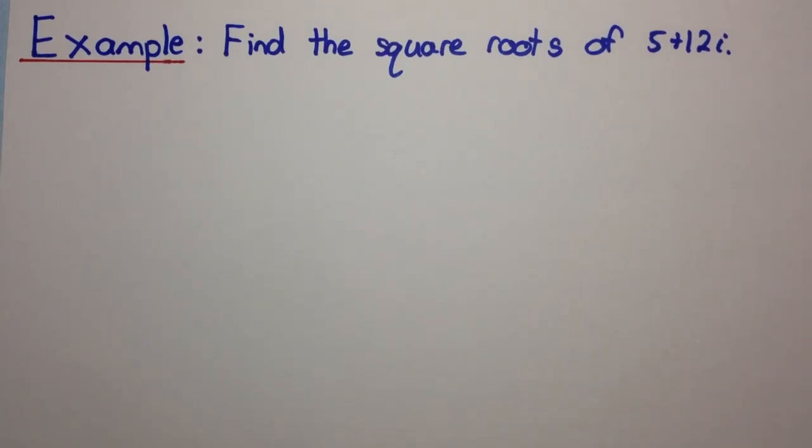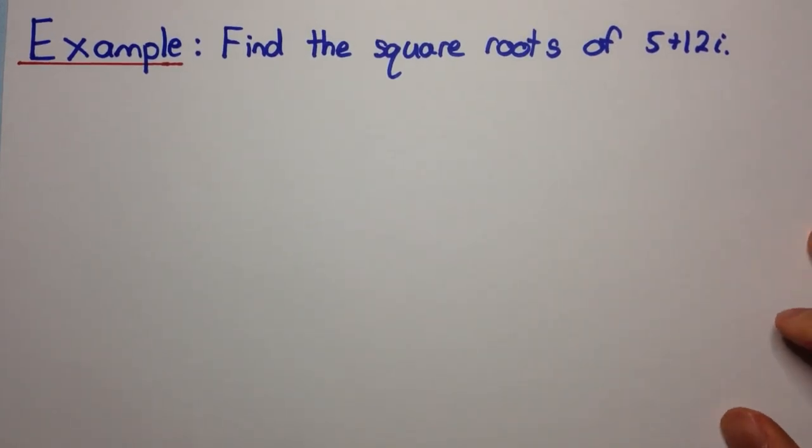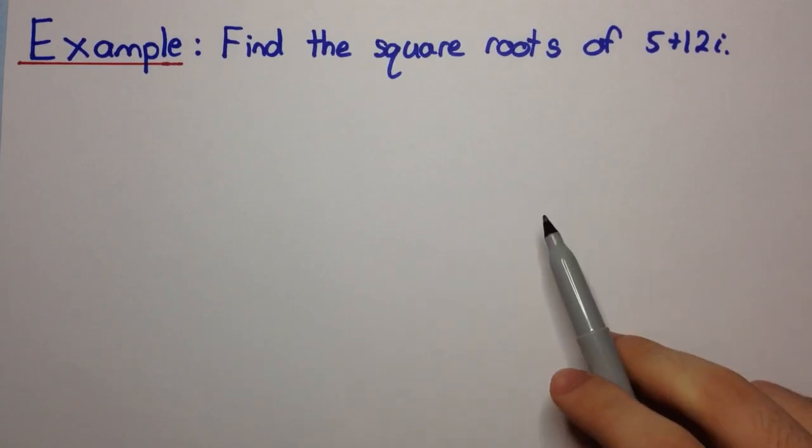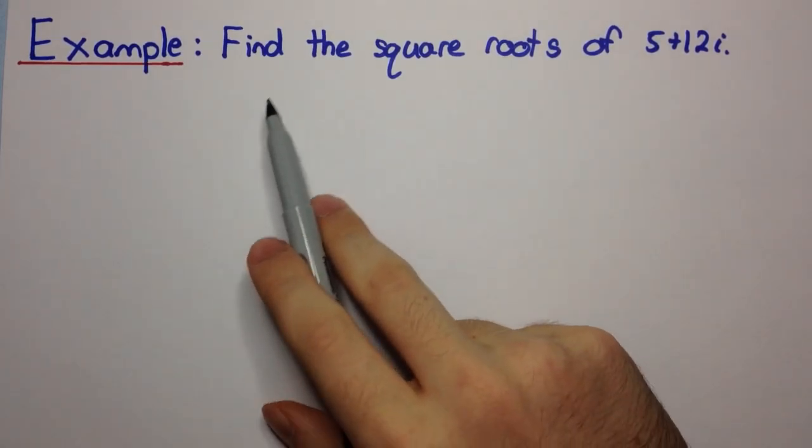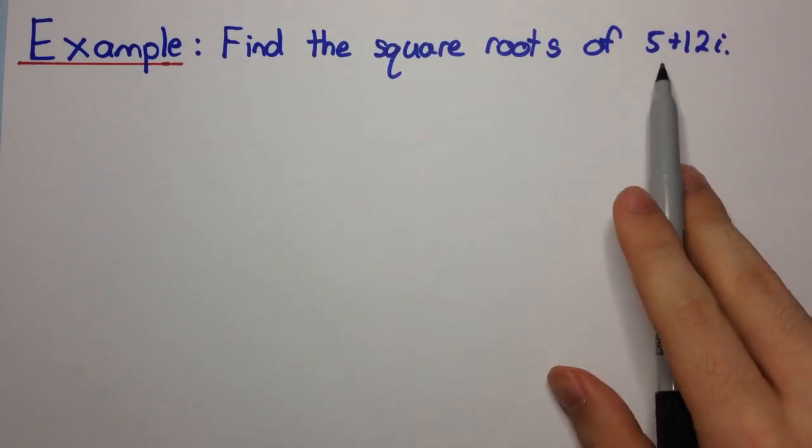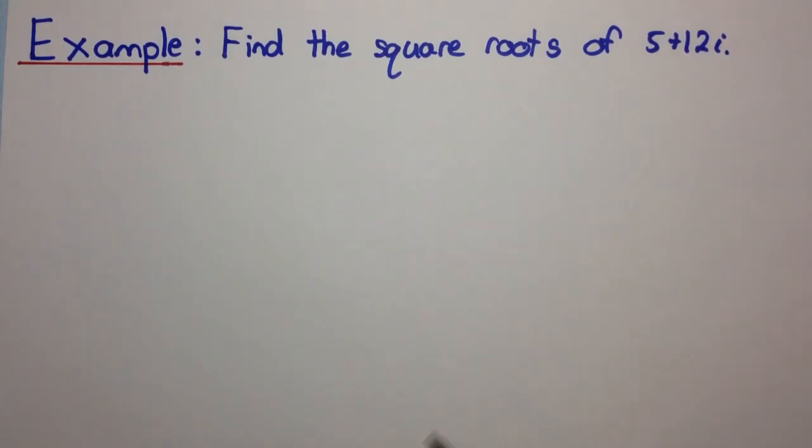Okay, welcome to today's video everyone. So the example we're going to be seeing today is finding square roots of complex numbers, and so in this particular one it's find the square roots of 5 plus 12i.